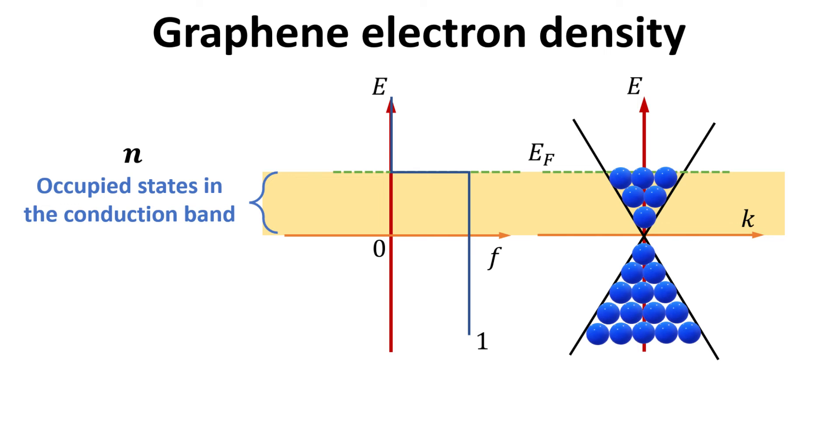In charge-neutral graphene at zero temperature, the Fermi energy is located at the Dirac point, with electrons filled up to the Dirac point. Thus, only the electrons in the conduction band are contributing to negatively charged excess electrons, and is what we want to keep track of.